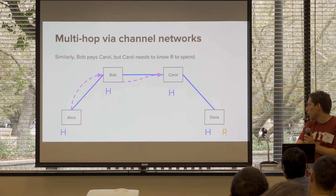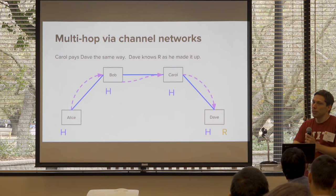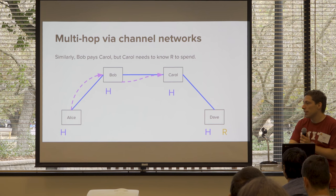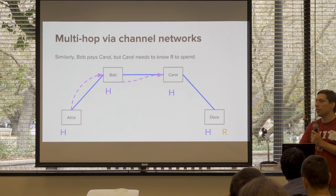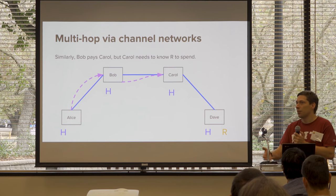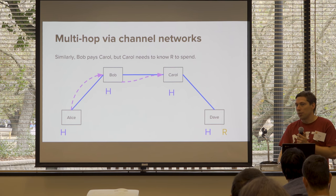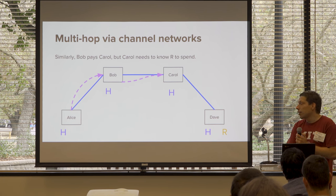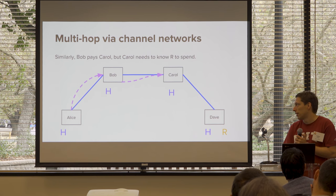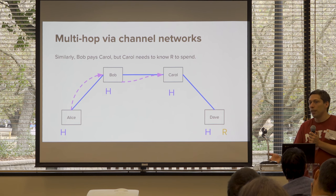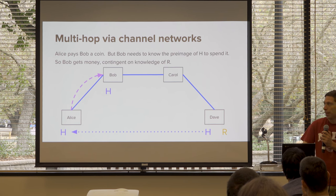Bob then can go back to Alice and say it didn't work — we got to Carol and Carol couldn't get further. And Alice can say okay it didn't work, and try to connect to Dave or find another path.